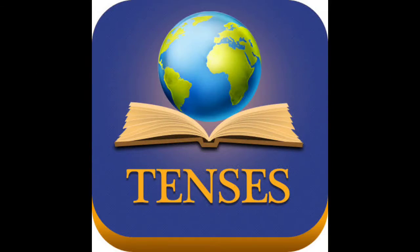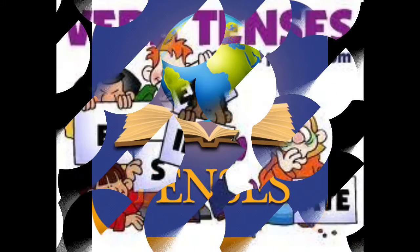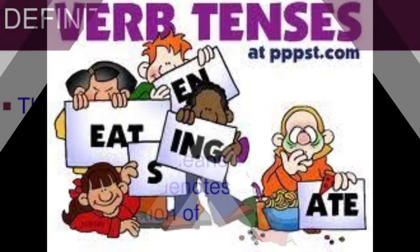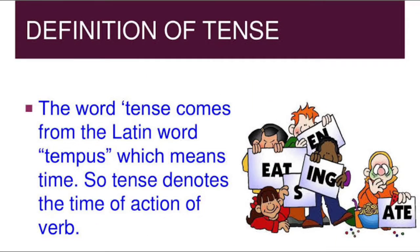Tenses are otherwise called verb tenses because they completely depend on the verbs. The word tense comes from the Latin word 'tempus' which means time. So, tenses denote the time of action of the verb. Tense is a word derived from the Latin word 'tempus' which means time, so tense denotes the time of the action of the verb.